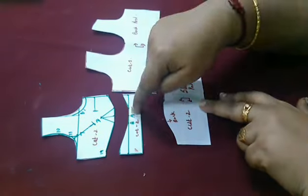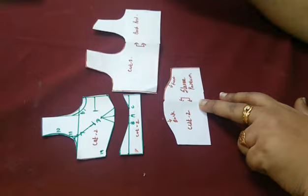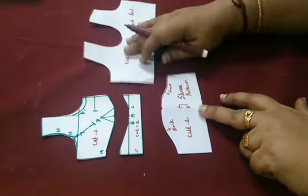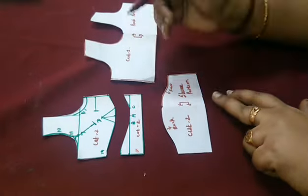And this is the midriff - also cut two pieces. So these are the four parts we need for making a blouse.